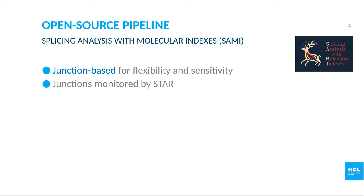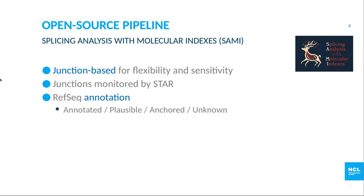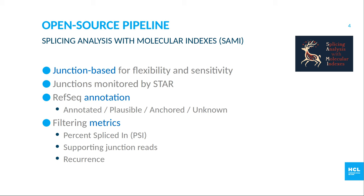For the splicing analysis, we chose to make it junction-based rather than event-based, to make sure we don't miss complex events which were not anticipated. Junctions are collected by STAR and annotated with RefSeq. They are either annotated — present in the annotation — plausible — joining two sites known in the annotation but with no transcript splicing those two exons together — anchored if only one of the two sites is known, or unknown if neither is known.